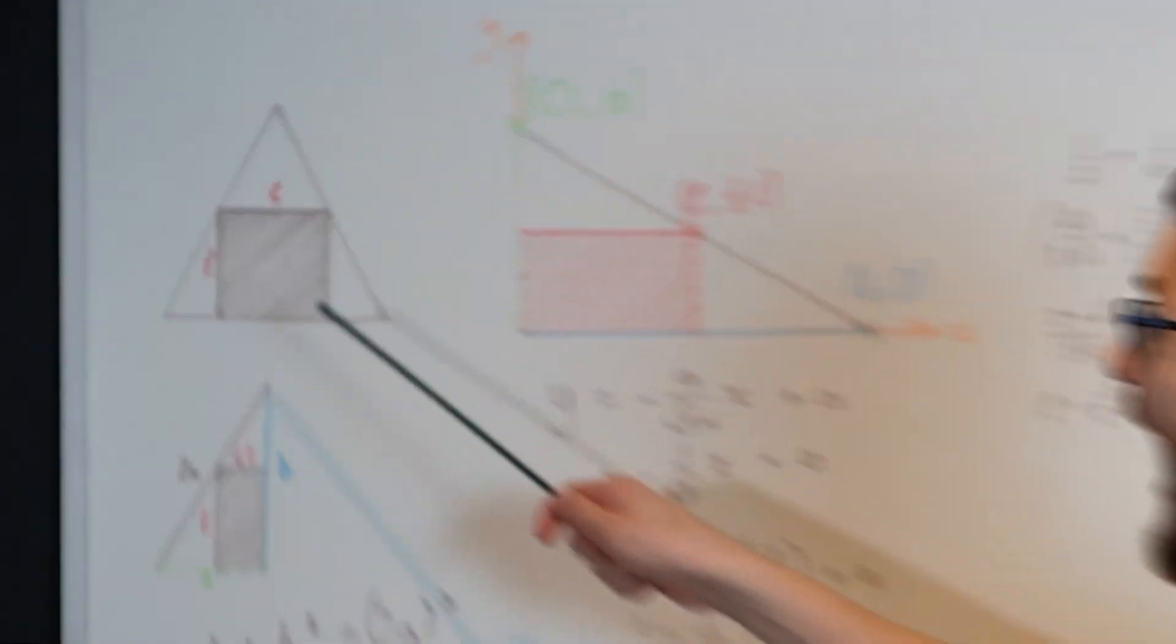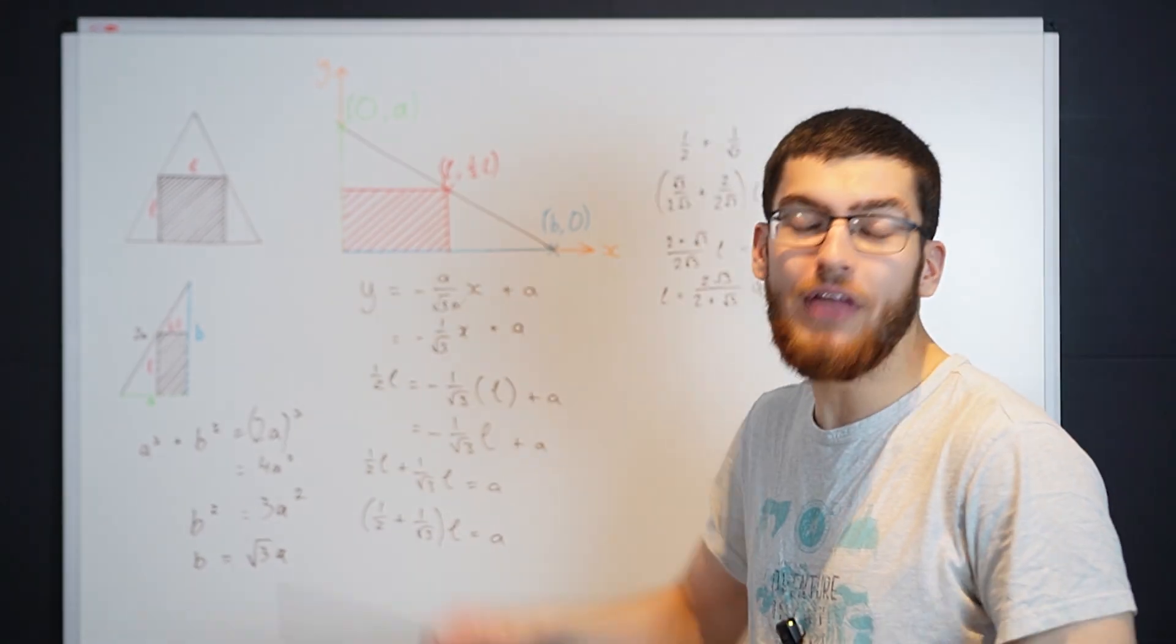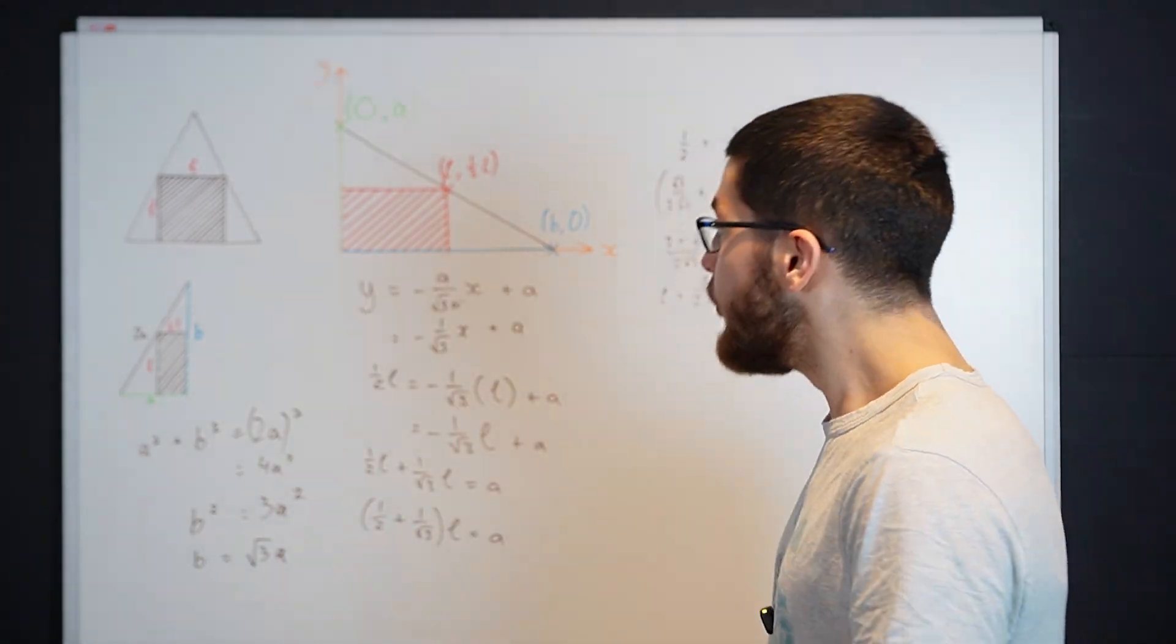The last step is to find the area of the square, then find the area of the whole triangle, and then divide the square by the triangle.